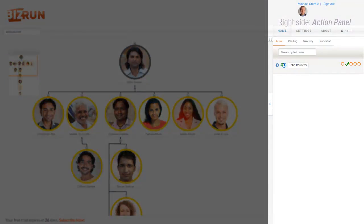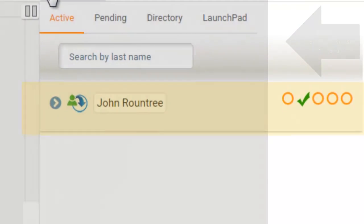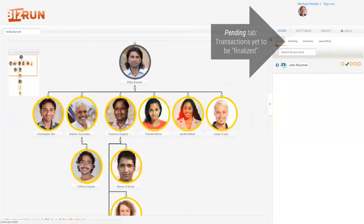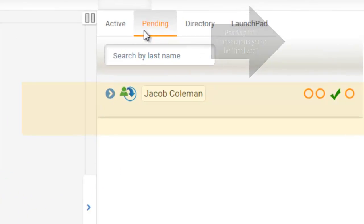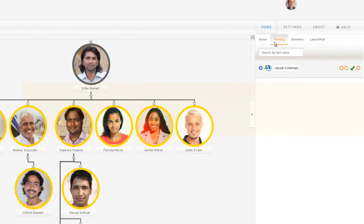Do you see the navigation bar at the top of the action panel? The first menu item, Home, contains four tabs. If you're not a BizRun administrator for your organization, you'll see three tabs here. After you build your organization and enable approval workflow, the Active tab in the Home menu area is where you'll access transactions and tasks requiring your review and action. After you take action on an item, it then appears in your Pending tab. The transaction remains in Pending until it's finalized or when it's fully approved with all associated tasks completed.